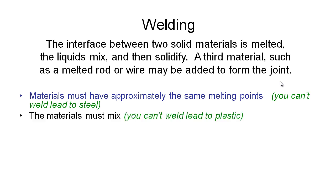The materials must also be able to mix together. You might have an example where you're trying to weld lead to plastic — if you look up the melting points they might be very similar, but because these materials are so dissimilar they won't mix together happily, so we're not going to be able to create a workable weld between them.